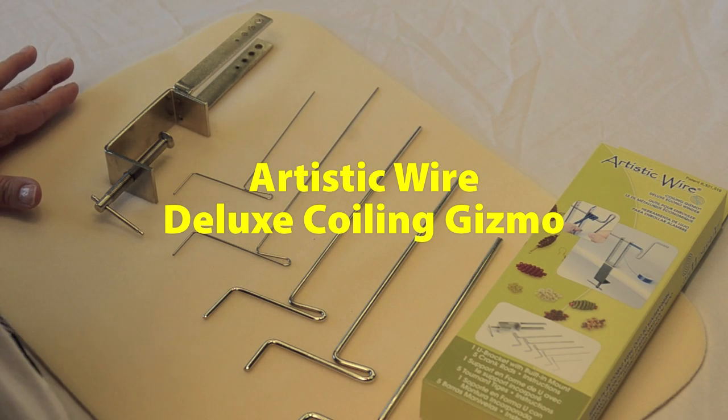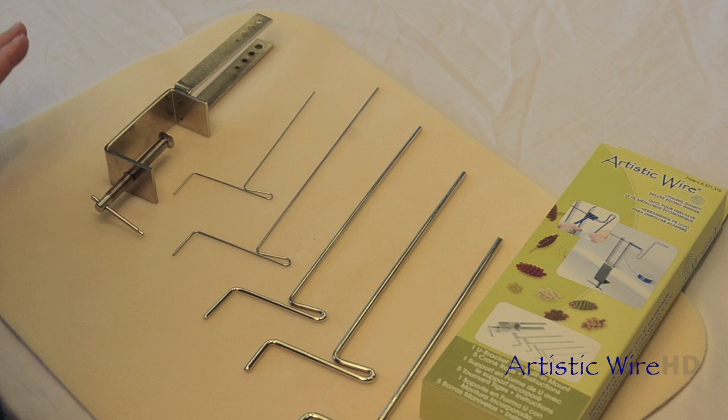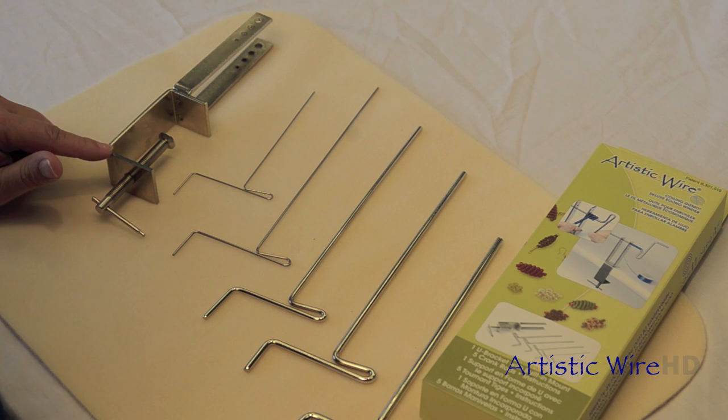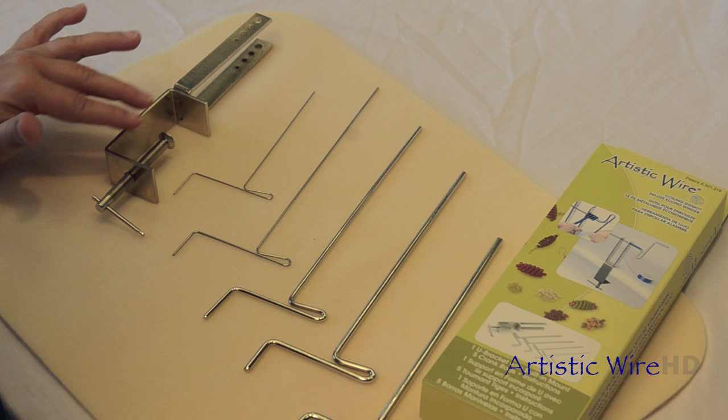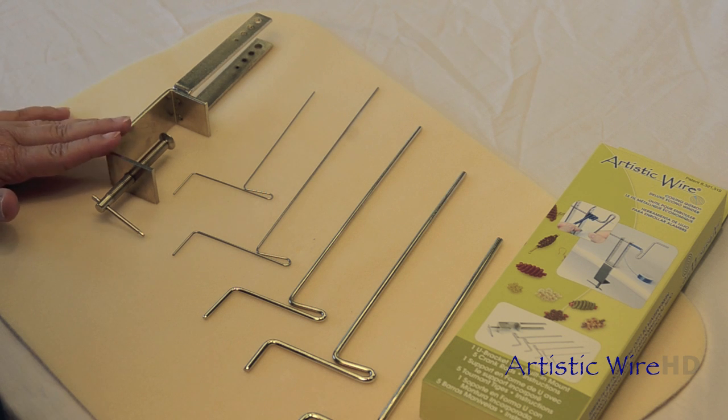With your Artistic Wire Deluxe Coiling Gizmo Kit, you are going to receive one U-bracket with the built-in mount. This is really great because this will mount to your table.